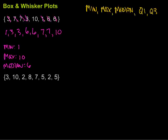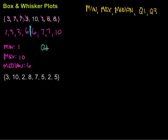Then I need to find the quartiles. The first quartile is really the median of the first half of the data. Here's my middle, and to find the first quartile I'm going to look at the lower section of the data and find the middle of that. There are four values, so two smaller and two larger, and the middle would be three. So my first quartile is going to be three.